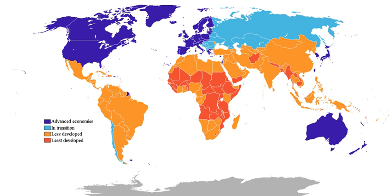The dependent territories with HDI values equivalent to 'very high human development' were: Jersey, Cayman Islands, Bermuda, Guernsey, Gibraltar, Norfolk Island, Faroe Islands, Isle of Man, British Virgin Islands, Falkland Islands, Aruba, Puerto Rico, Martinique, Greenland, and Guam. Of note, the HDI values in the 2009 report were calculated using the old HDI formula, while HDI values after the year 2010 are calculated with a different formula.